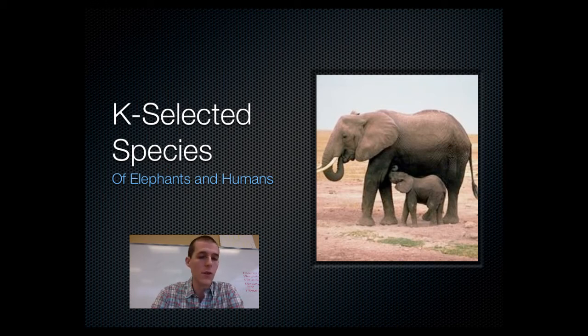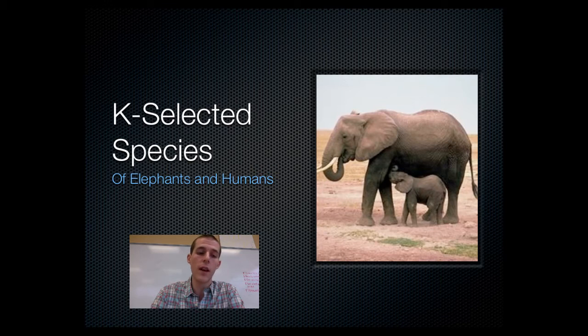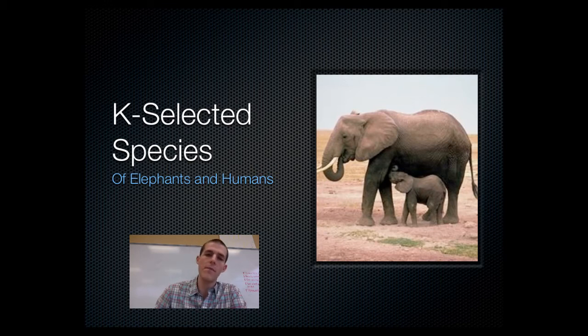Just to recap: K-selected species reproduce slowly, provide good care for the young, and are usually larger animals. Good examples are elephants, humans, whales, and dogs.